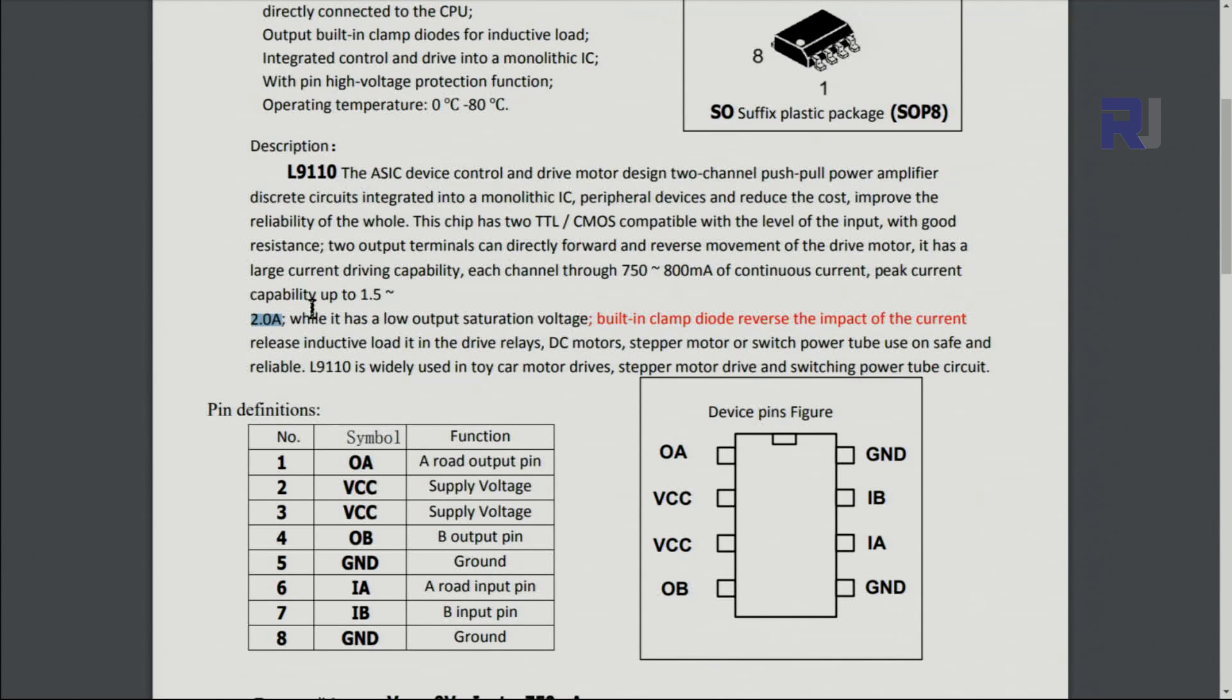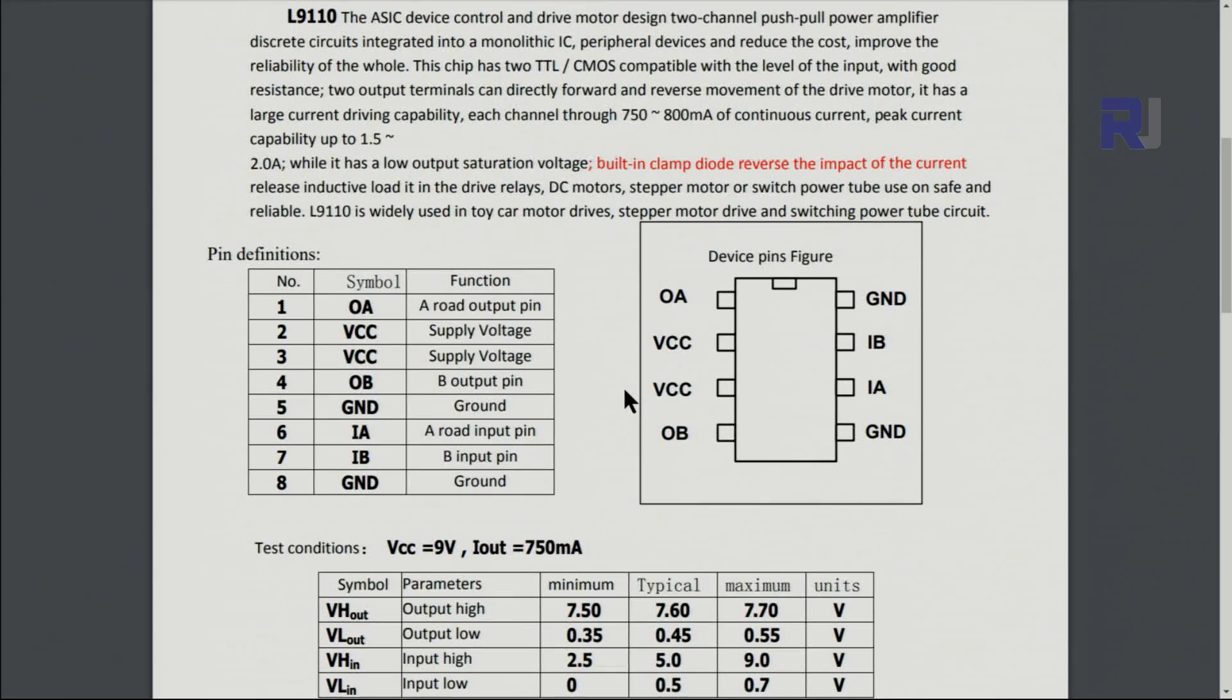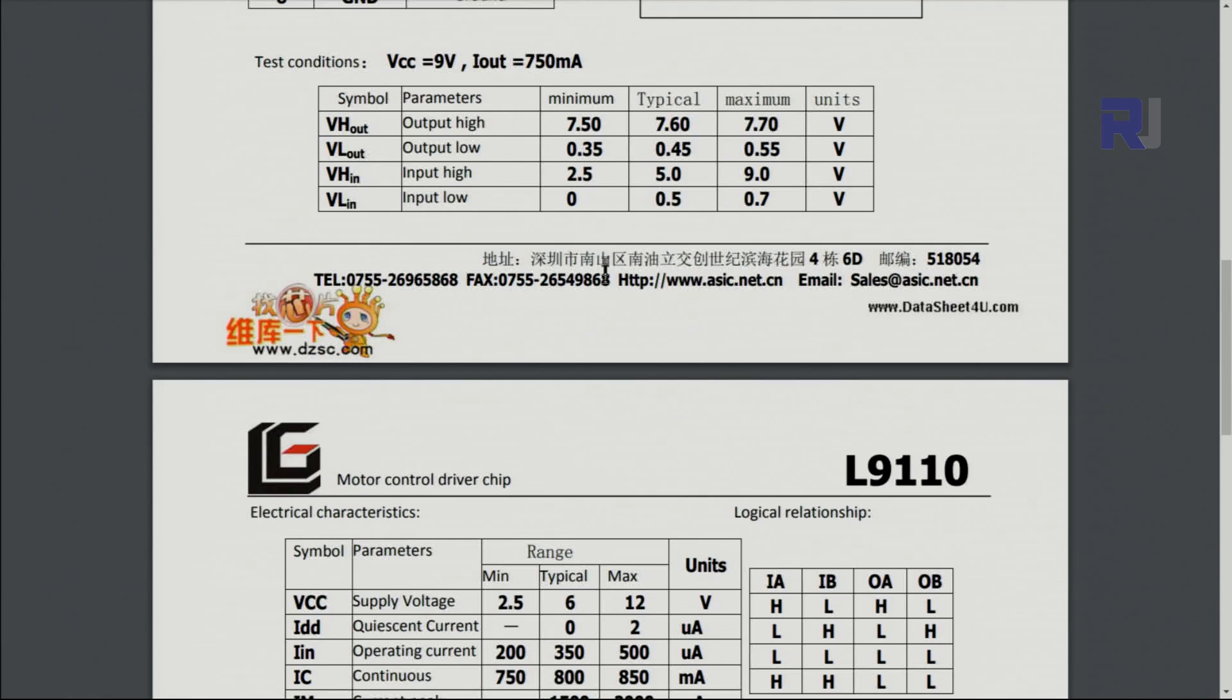It has built-in reverse diodes to protect from back current. Here are the pins on the chip. That's output A and that is output for B. The motor will be connected here and here. This is the VCC, that is input A, input B, so you can control that one separately, this one separately.